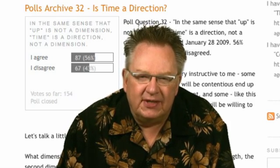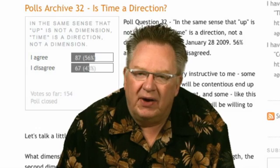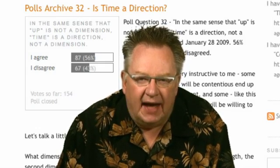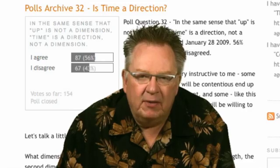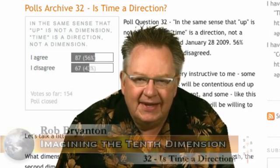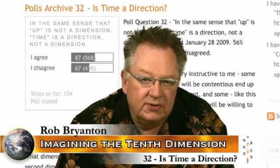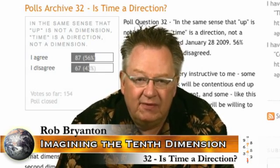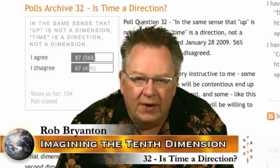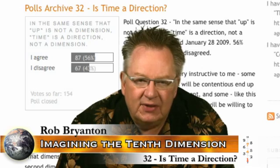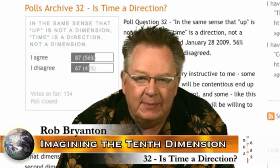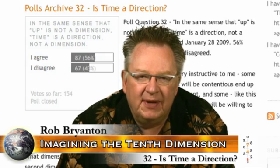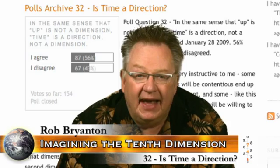Discussions of the fourth spatial dimension are bothered by all the same possible miscommunications. Is time a direction in the fourth spatial dimension? Sure, it could be one of them. But depending upon your orientation within that space, you could just as easily say that up, or forwards, or even east is a direction within 4D space. As soon as you pick one of those words, you then limit what you can call the other directions. As it says in the Wikipedia article on the fourth dimension, one of the proposed sets of names for the two new directions in the fourth spatial dimension would be ana and kata.